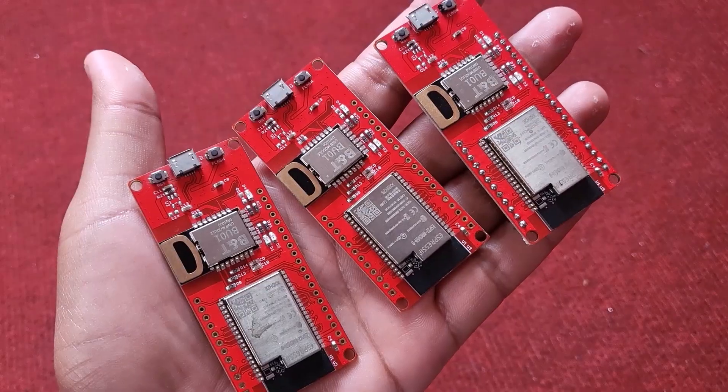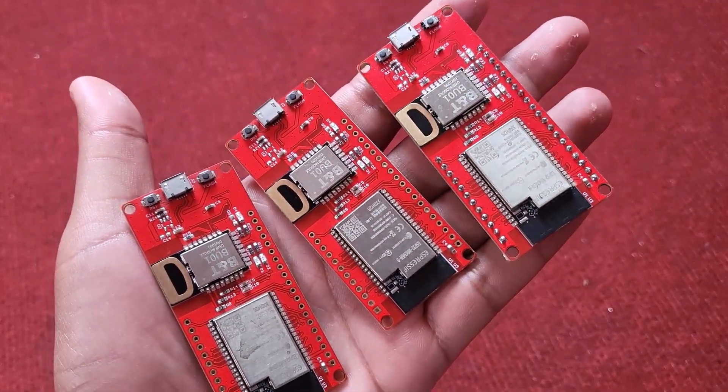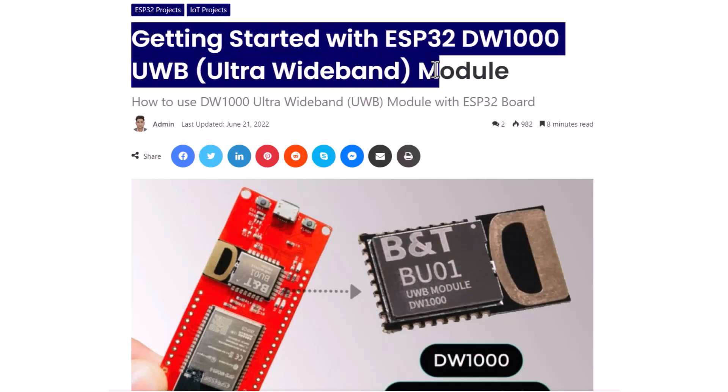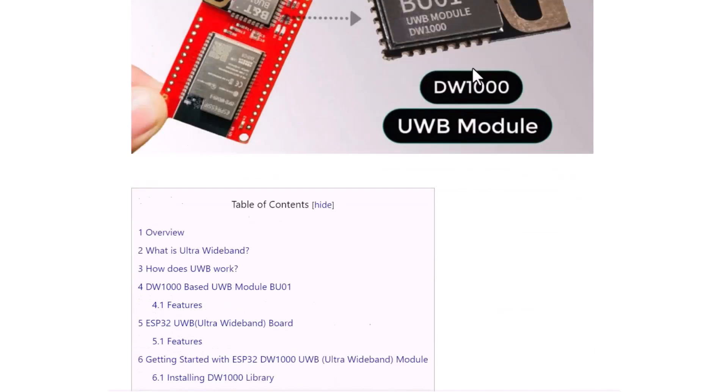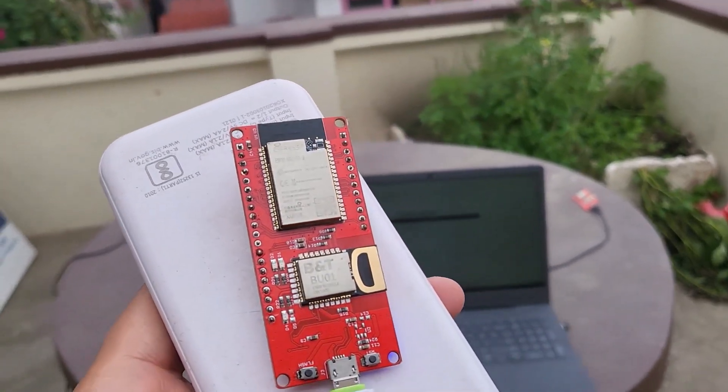In fact, I got these three modules based on ESP32 Ruber chip and DW1000 UWB chip. In the last video, I explained this module in detail. In today's video, we'll make an indoor location positioning system using this module.